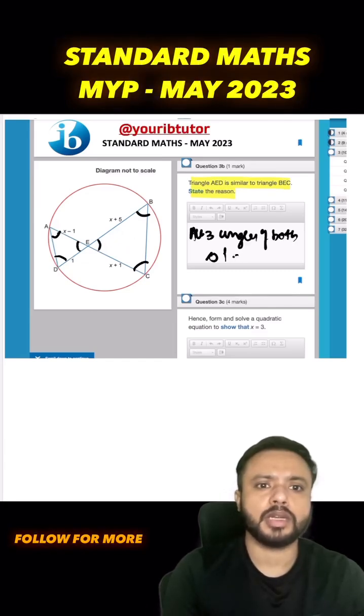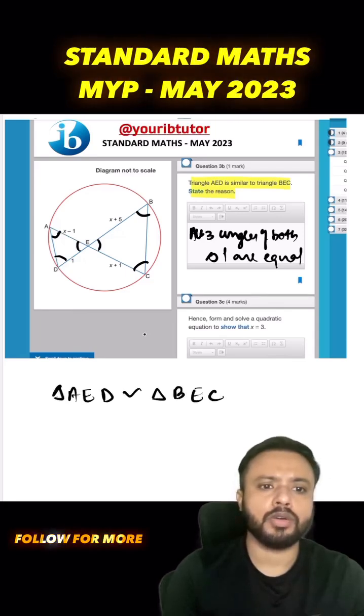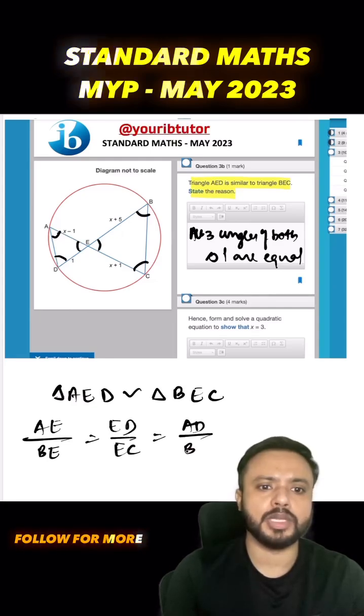Here it's given that triangle AED is similar to triangle BEC. Now we all know that if two triangles are similar, then their corresponding sides are proportional. So from here I can say AE upon BE would be equal to ED upon EC would be equal to AD upon BC.